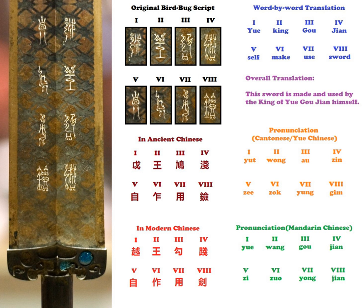Other names for this kind of seal script include Niao Chang script and Niao Changzhuan. The character Xu here means 'script.' Another alternate name is Niao Changwen, where the character Wen means 'character.'